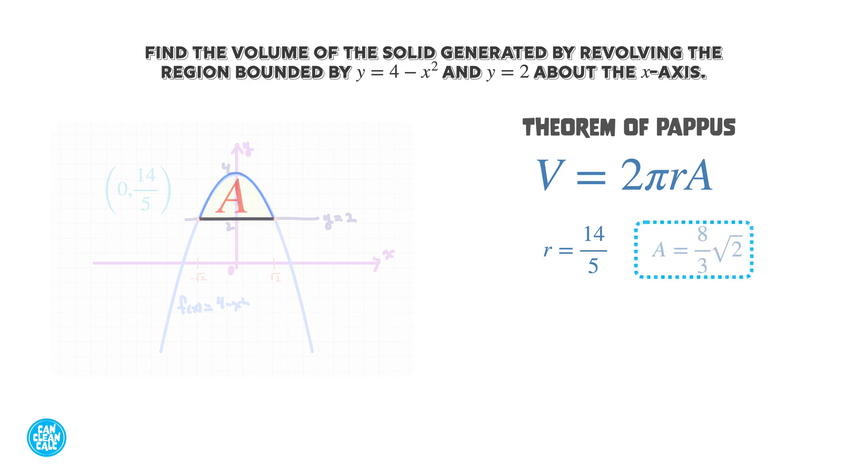From our previous video, we computed the area of the enclosed region as A = (8/3)√2.